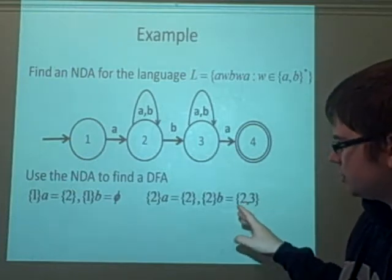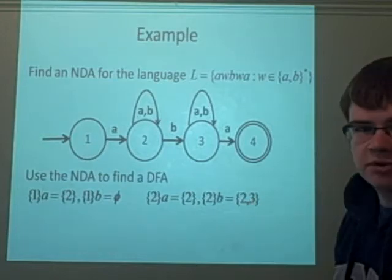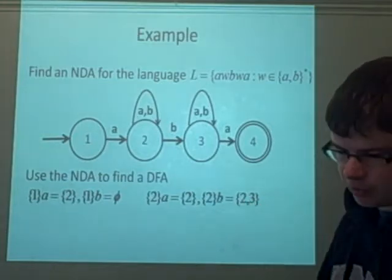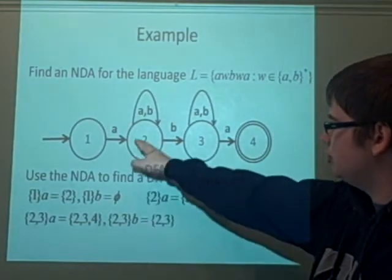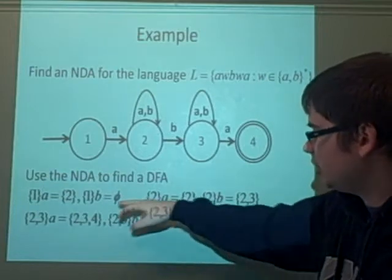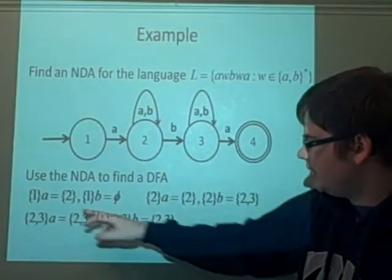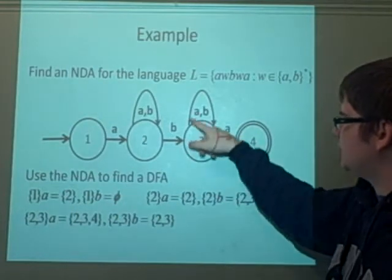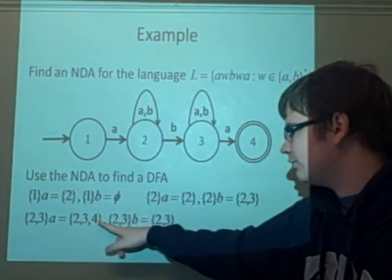Now what have we got? New states we've got, we've done 2, we've got 2, 3. So we want to apply A and B to 2, 3. Let's see what happens. If we apply A to 2, then we're staying in 2. If we apply A to 3, we can either stay in 3 or we can go to 4. So we have the state 2, 3, 4.